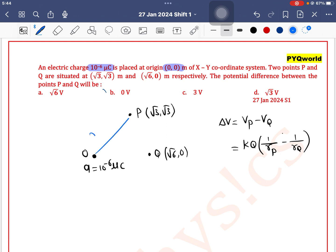So the distance of point P can be written as under root of (√3)² plus (√3)². So √3 squared is 3, 3 plus 3 is 6, so √6. And for point Q, distance RQ equals under root of (√6)² which means 6, so √6.